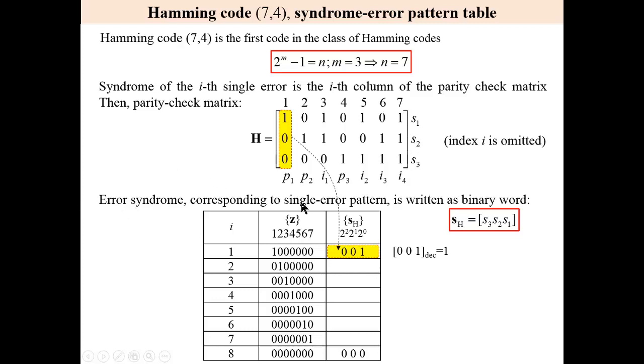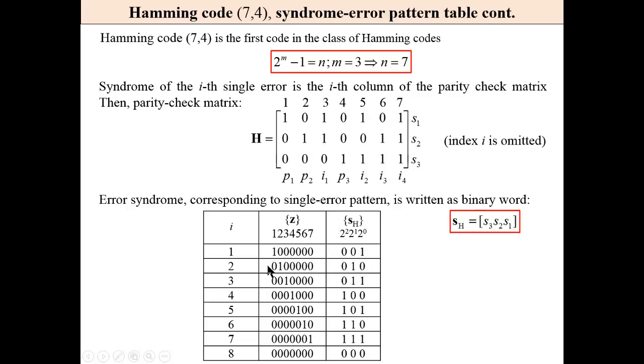Error syndrome corresponding to every single error pattern can be calculated. For error pattern, error of the first leftmost position, we will obtain the following syndrome, which is in the first column. Then after binary to decimal conversion, it is 1, first column. And same for 6 other syndromes, for 6 other single errors. In second column, Hamming syndrome is 2, in third 3, in seventh 7.